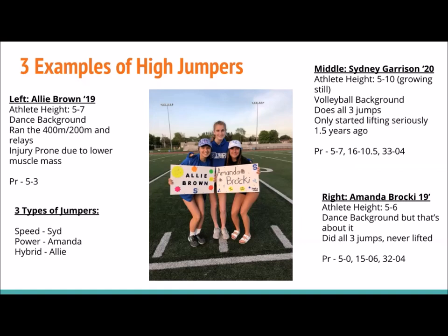Because they were all different types of jumpers, the ability to identify what type you're dealing with goes back to testing. If someone crushes the broad jump and triple hop but their fly 10 is horrendously slow, they're probably a power jumper — that was Amanda. She had good turnover and form but wasn't a sprinter. Her mark was shorter because her strength was generating power from short distances. Sydney is a speed jumper — she can run 43-44 for the 300 and we'd move her mark further back.